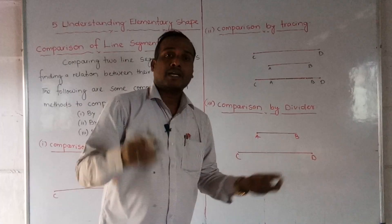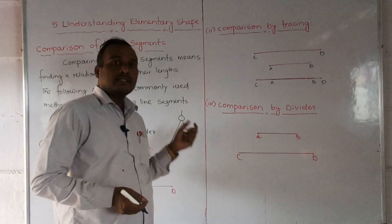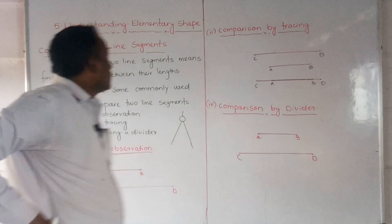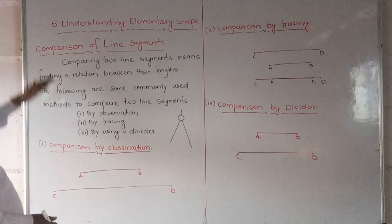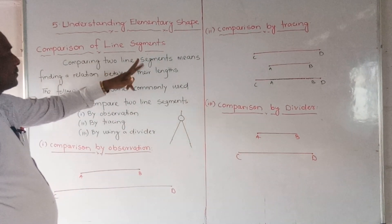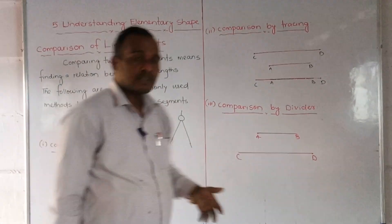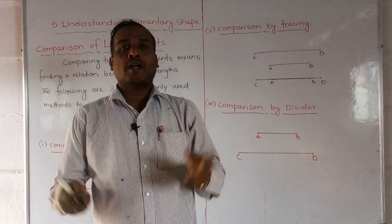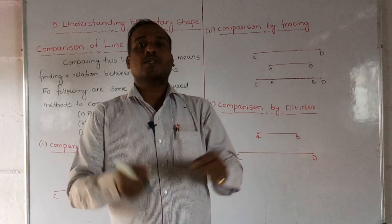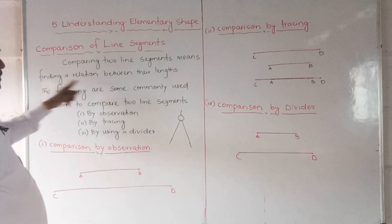Did you understand? The other instrument is compass. By using the divider we can detect and find out which one is greater. Today we are going to discuss about the comparison of line segments. Comparing the two line segments means finding the relationship between their lengths — finding out which length is greater or which length is smaller.